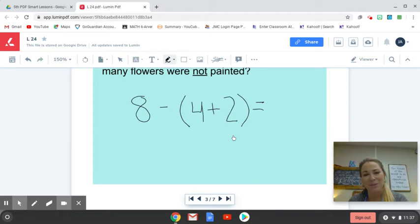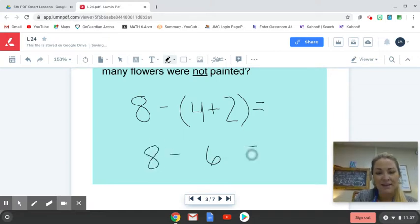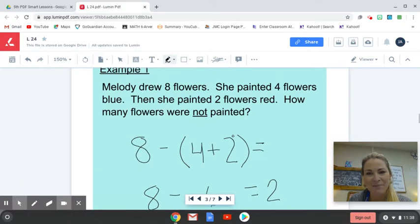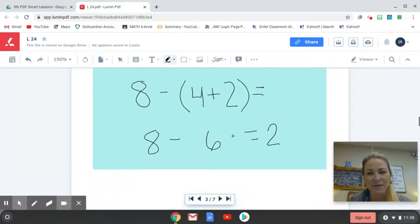I'm going to do the work that's in parentheses first. So 4 plus 2 is 6. I'm going to bring down my 8. 8 minus 6 is 2. And I'll do my best to write a label with this stylus pen, but my label in this case, of course, would be flowers.